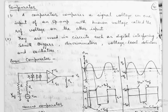A comparator basically compares a signal voltage on one input of an op-amp with a known voltage called the reference voltage on the other input. Generally the comparator compares two signals, and if one is known, then by the help of the comparator we can find out whether the unknown voltage is higher than or lower than the reference voltage.